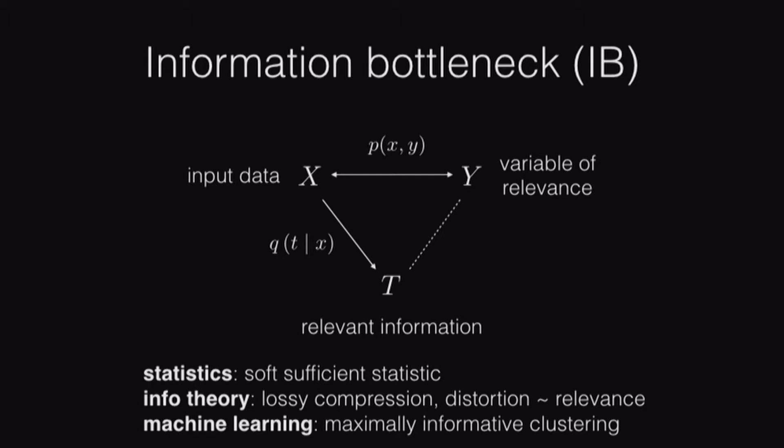From a machine learning point of view, you can think about this as a clustering algorithm. T will generally be of smaller cardinality than X, so we're clustering the data X into cluster identities T, where those cluster identities are maximally informative about some other variable of interest.